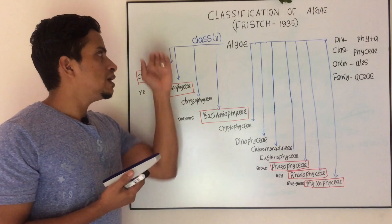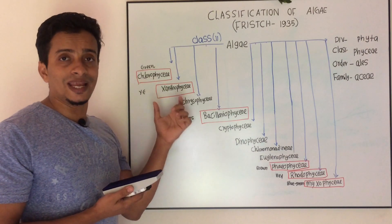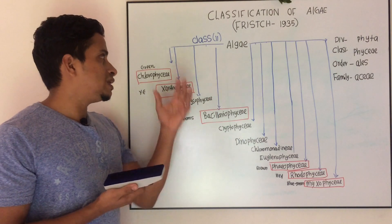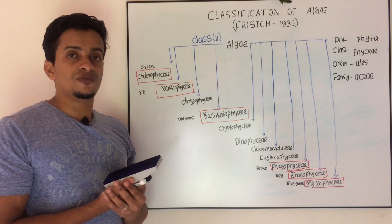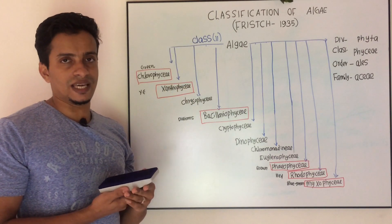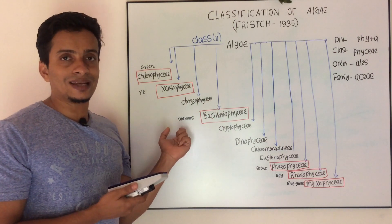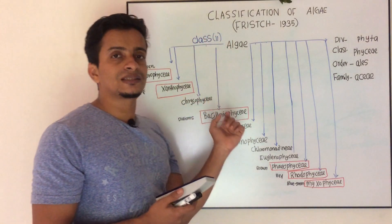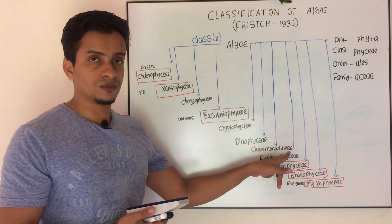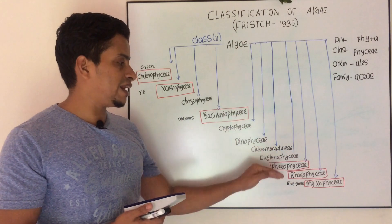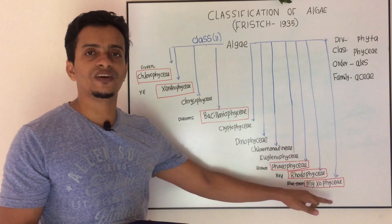We are learning Chlorophyceae. The second member is Xanthophyceae, which is yellow-green algae. The third class is Chrysophyceae. The fourth class is Bacillariophyceae, commonly known as Diatoms. Next is Cryptophyceae, Dinophyceae, Chloromonadineae, Euglenophyceae, Phaeophyceae — Brown Algae, Rhodophyceae — Red Algae, and Myxophyceae — Blue-Green Algae. These are the eleven classes.